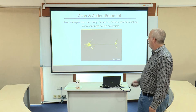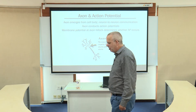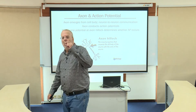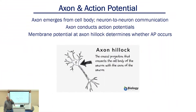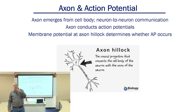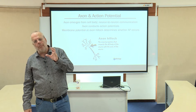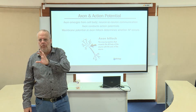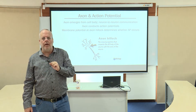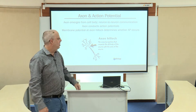So what we need to understand is how an action potential is generated. The most important part for the initiation of an action potential is the area of the cell body where it tapers down into the axon itself. We call this the axon hillock, and it is the membrane potential of the axon hillock that determines whether an action potential is generated at any single moment in time. Potential essentially just means voltage, or this charge differential.